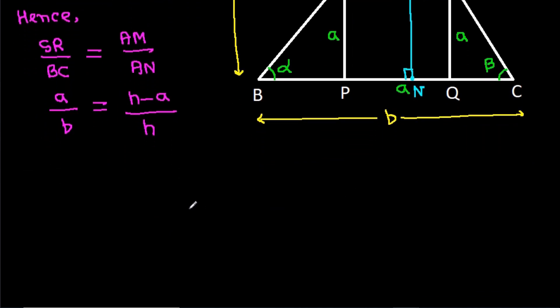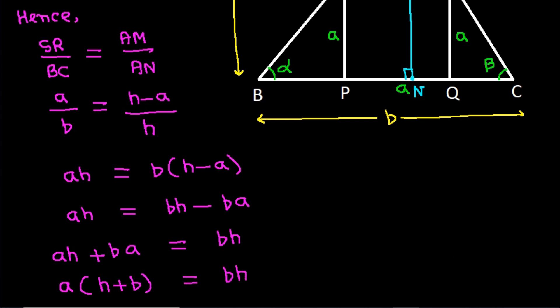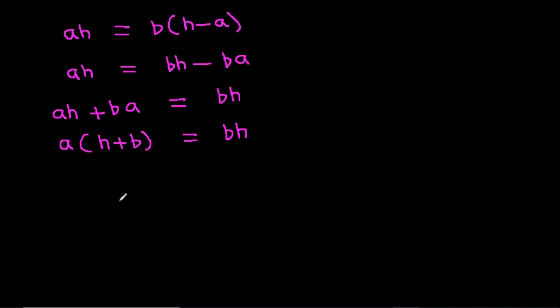And if we cross-multiply, then aH will be equal to b times H minus a. And aH is equal to bH minus ba. And aH plus ba will be equal to bH. And it is a times H plus b is equal to bH.